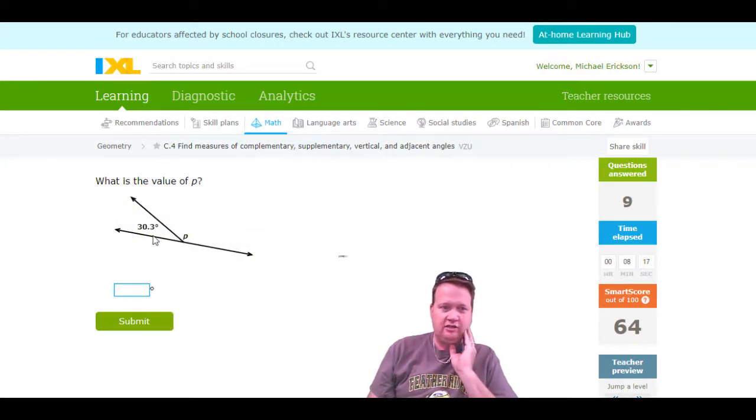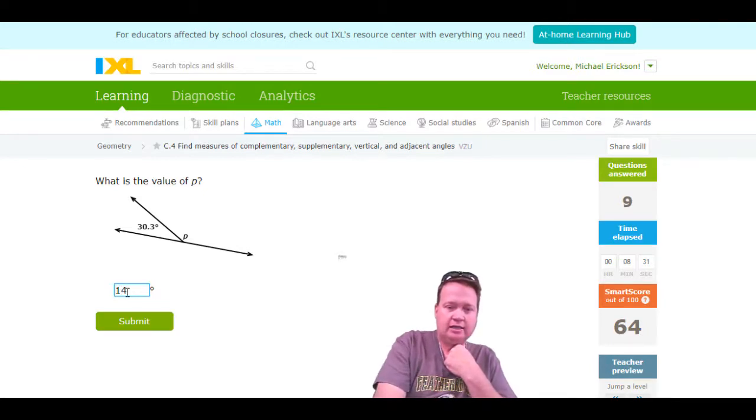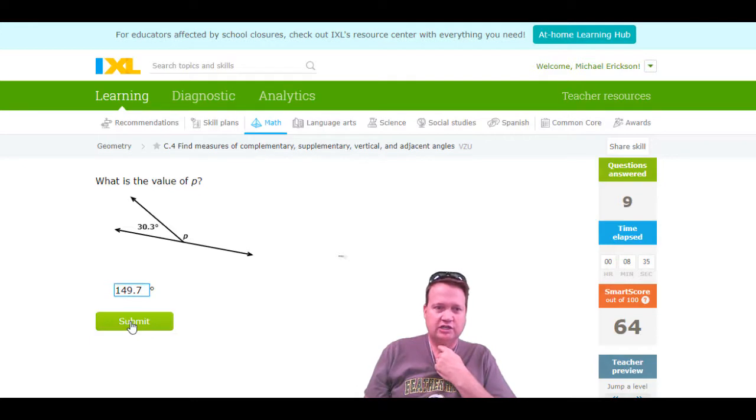Here is a straight line, 30.3. This is an adjacent angle. It's right next to and it makes a straight line. So angle P is adjacent to 30.3, it makes 180. That means it's going to be 149.7. If you get a calculator out to do that subtraction, you can. But those two are supplements.